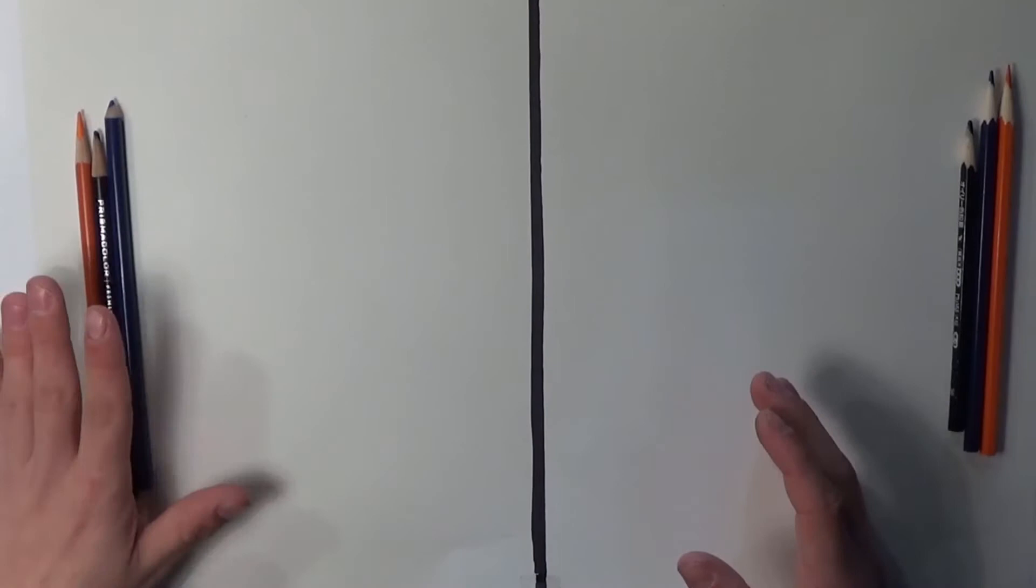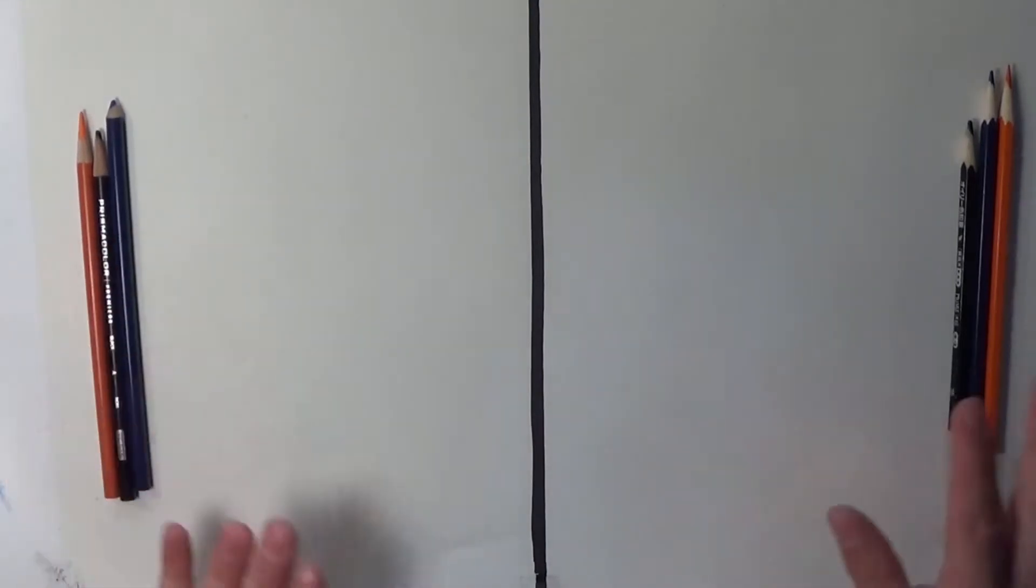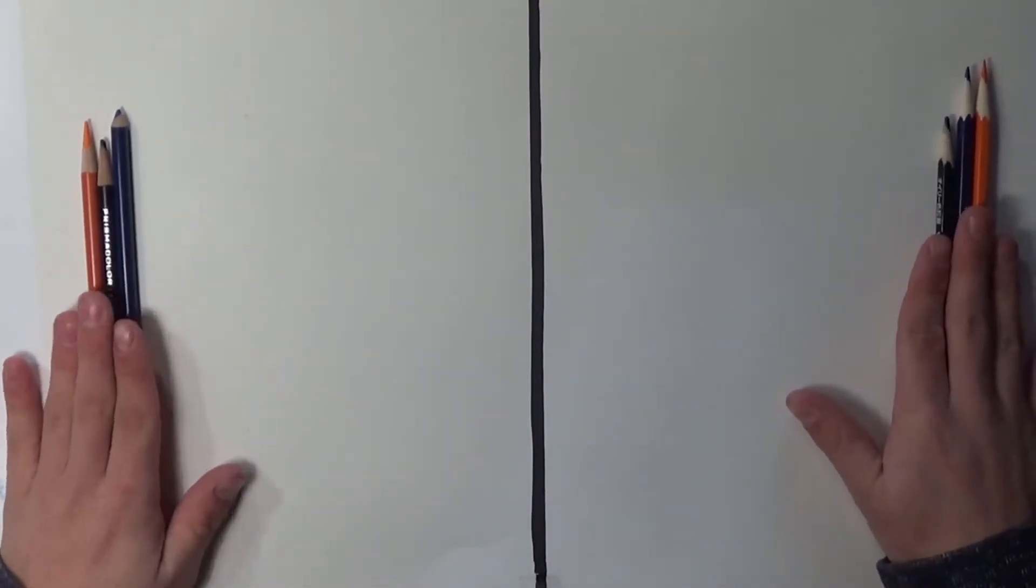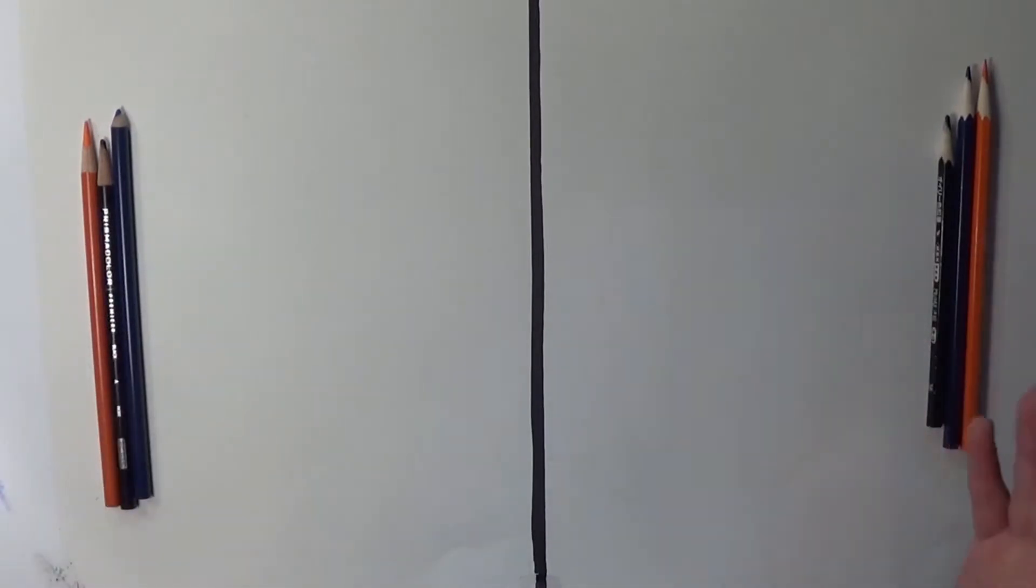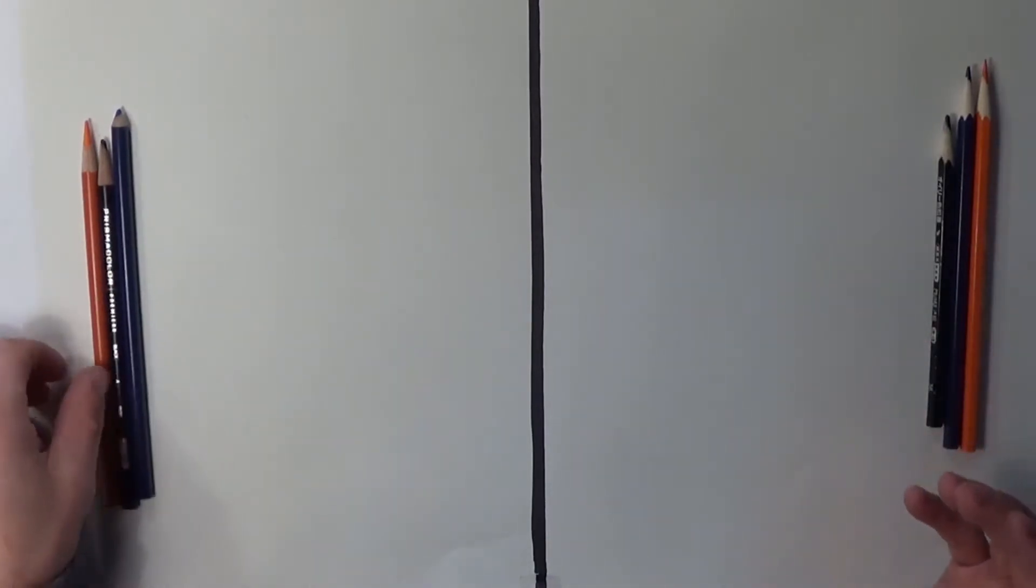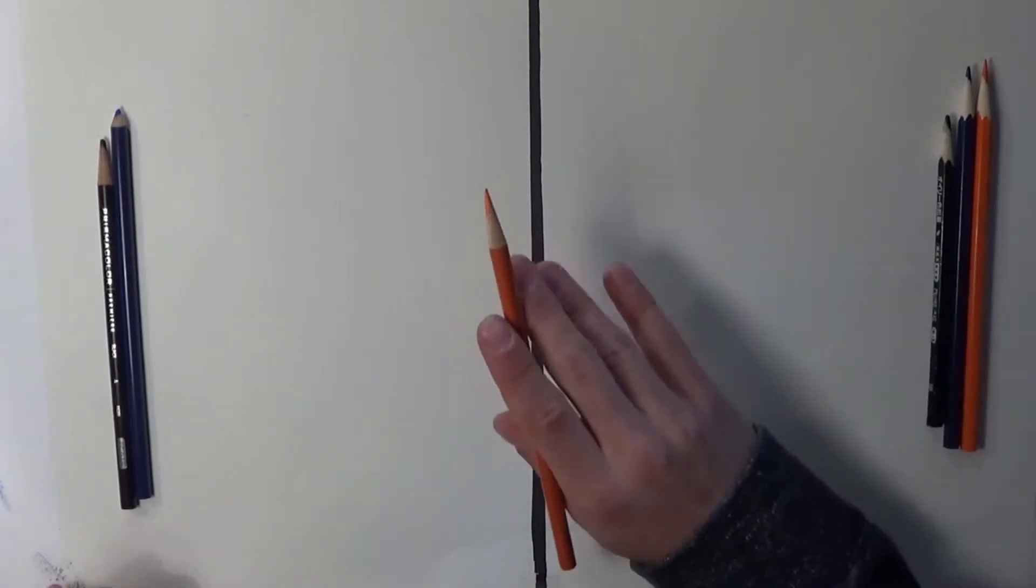Okay, so over here on the left you have your Prismacolor pencils, and you have your Muhai over here on the right. And they are really different in terms of how they write. That's the main thing and how they're different.